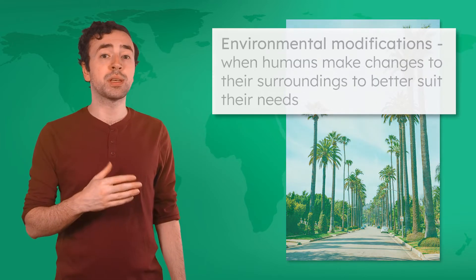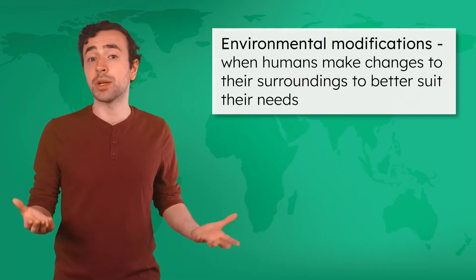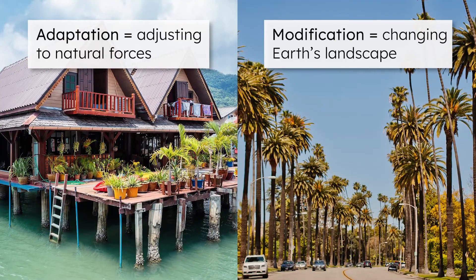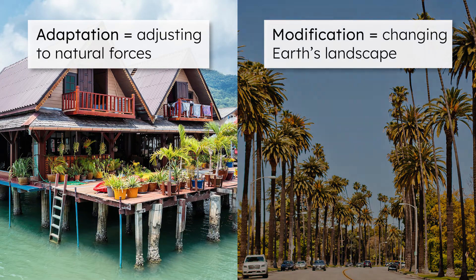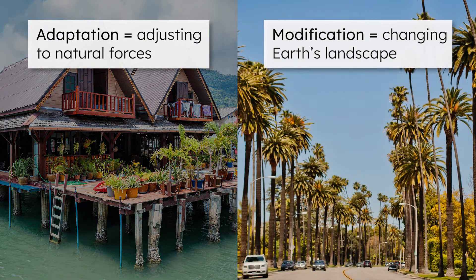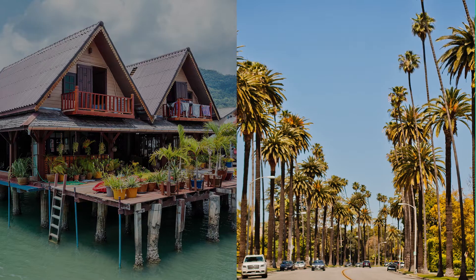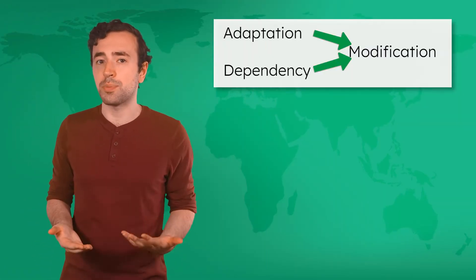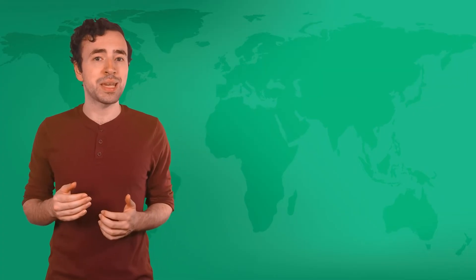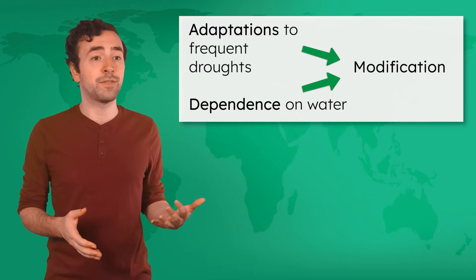One of my favorite things about California is the palm trees. But did you know they aren't even native to this region? They were brought here from other parts of the world to give the area a unique look, helping to attract tourists and new residents. This is an example of how humans modify their environments, making changes to their surroundings to better suit their needs. The difference between modification and adaptation is: when we adapt to our environment, we are adjusting to natural forces we cannot control, like flooding. When we modify the environment, we are changing the Earth's landscape, like adding palm trees to a place where they don't naturally grow.